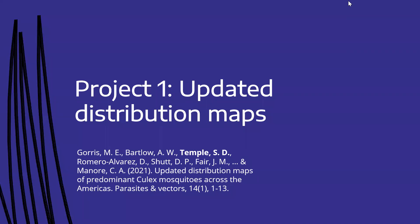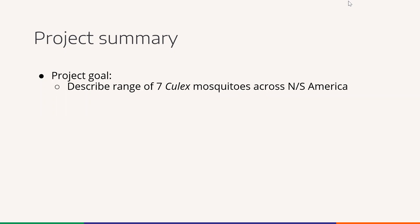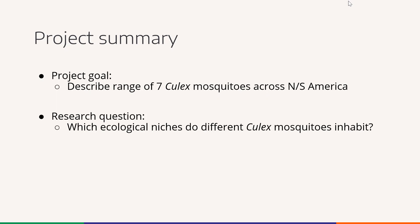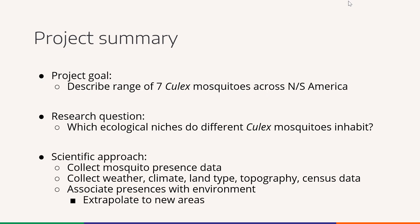In my first project I will talk about updating the geographic ranges for Culex species. We want to describe the range for seven species within the Culex genus across North and South America. The research question is: which habitats do the Culex mosquitoes favor? Our approach was to collect a large set of observations of mosquitoes across these continents, along with weather, climate, and land type information from satellite imagery. We built a model associating mosquito presences with these environmental conditions, trained it on a large collection of data points, and then extrapolated our model inferences to new areas on the continent.